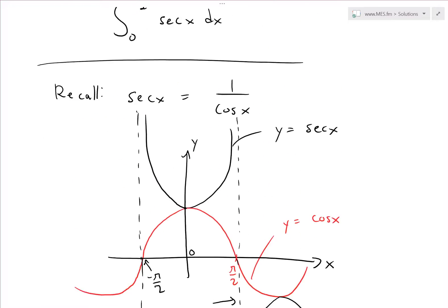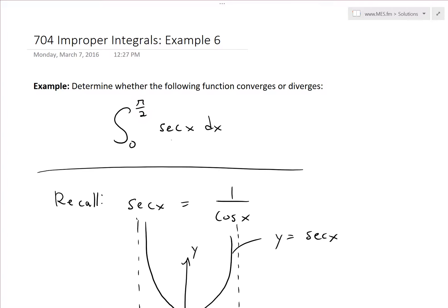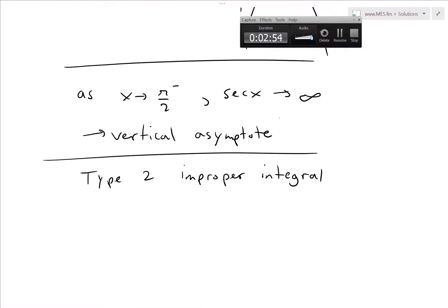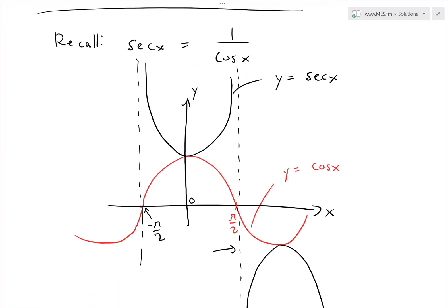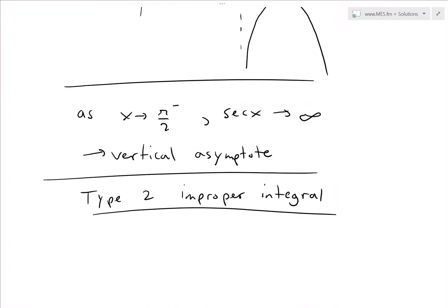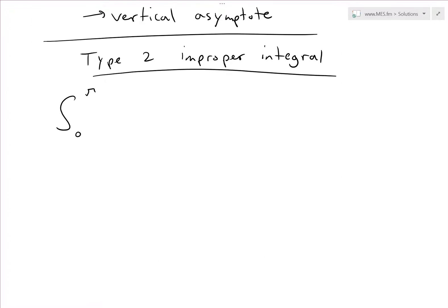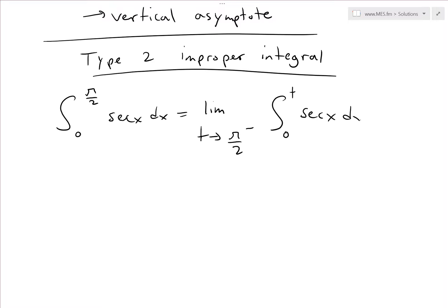This is an improper integral of type 2, like I showed in my earlier video. So basically we write this integral as a limit: the integral from 0 to π/2 of secant x dx equals the limit as t approaches π/2 from the left side of the integral from 0 to t of secant x dx.